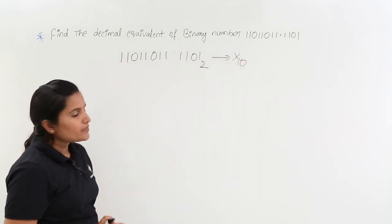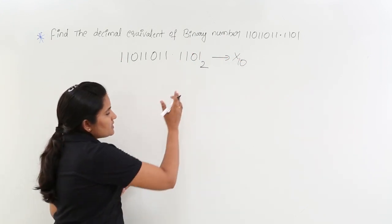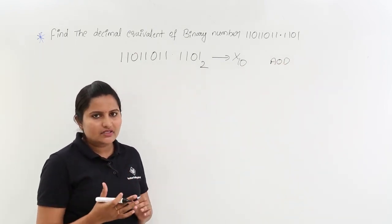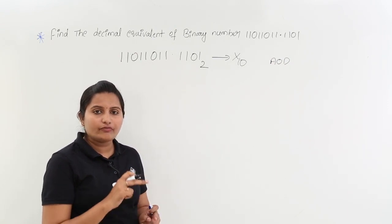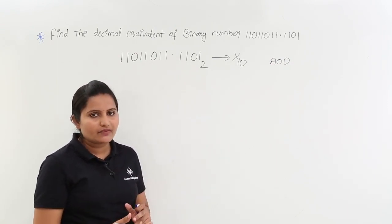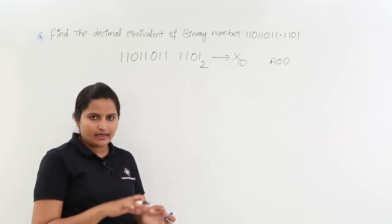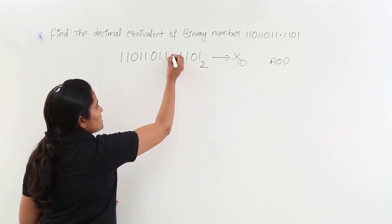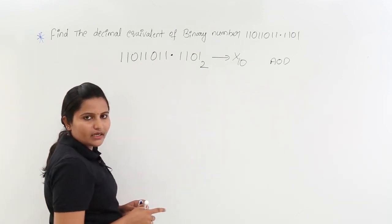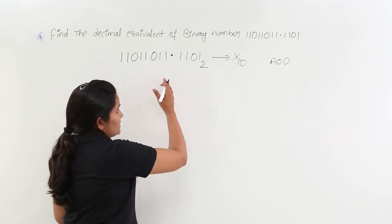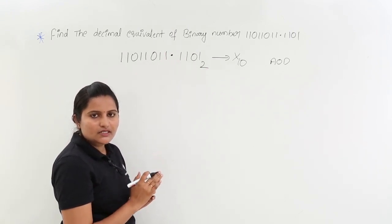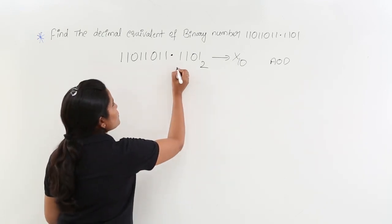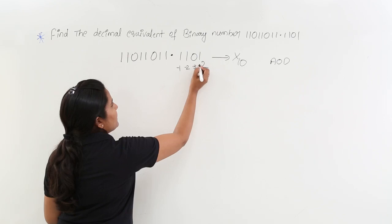This falls under any other number system to decimal conversion. The method is multiplication of digits with 2 raised to the power of their place values. For the digits after the decimal point, the place value starts from minus 1 and goes on increasing from left to right: minus 1, minus 2, minus 3, minus 4, and so on.